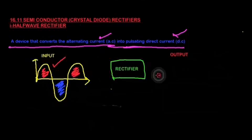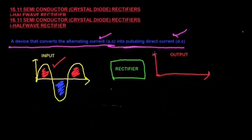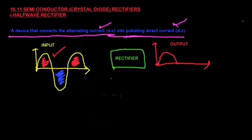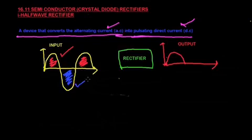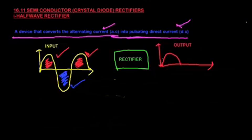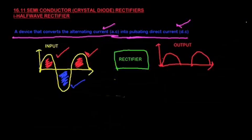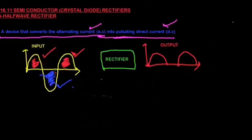When the first positive half cycle goes through the rectifier, you will get an output voltage. Then when the negative half cycle enters the rectifier, you will not get any output. When the next positive half cycle goes in, we get an output again. So only positive half cycles are allowed through the rectifier and the negative half cycles are suspended — we do not allow the negative half cycle.